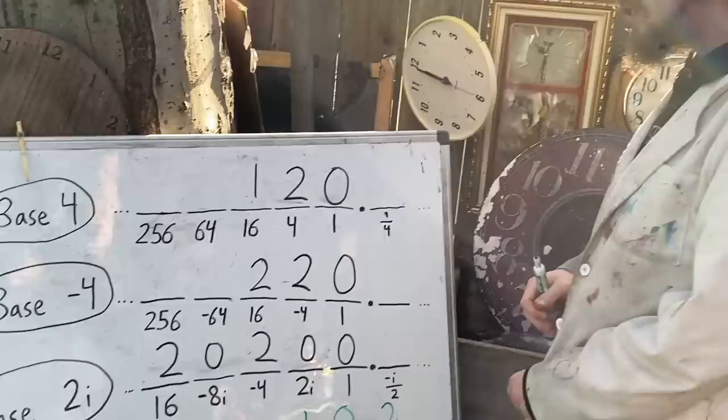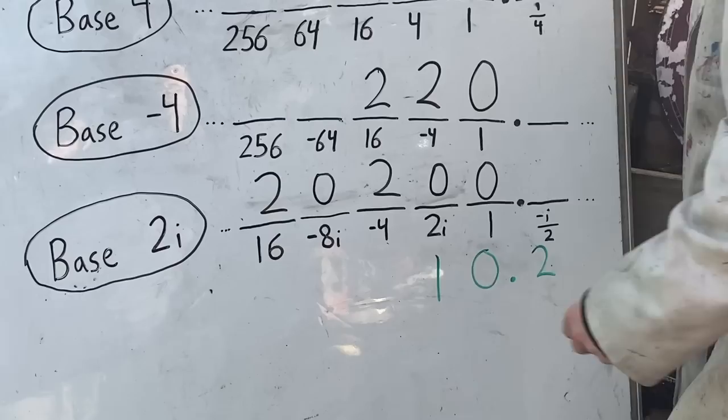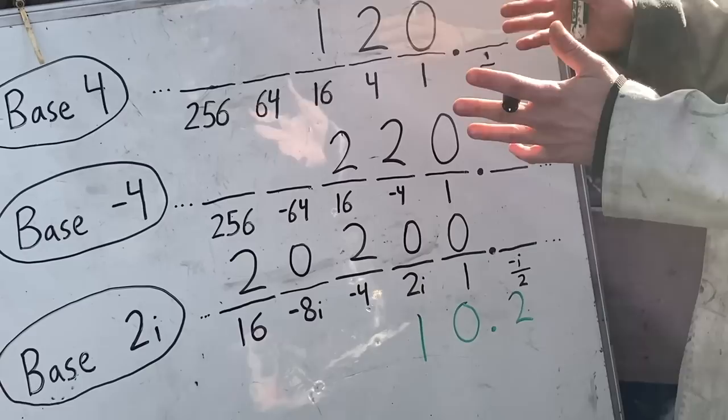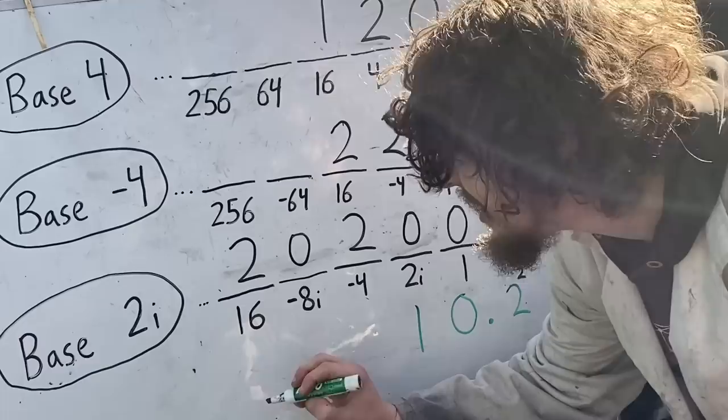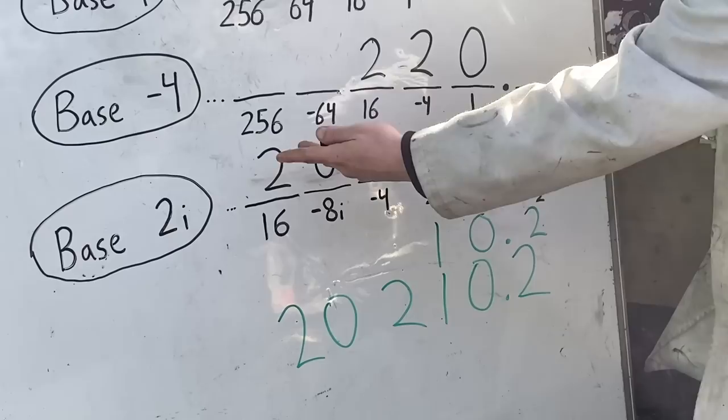And since the real numbers were built on these spots, and the imaginary numbers were tucked in between on different spots, if we want to make a complex number like one of those Gaussian integers, we can just combine these. Like if I wanted to represent 24 plus i, I would take the 2 0 2, and there's a 1 0.2. And that's how base 2i would write 24 plus i.